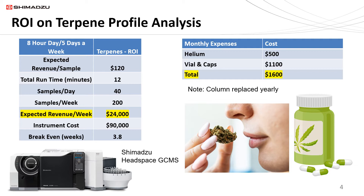The table presents an analysis time of 12 minutes, which could be increased based on the number of terpenes being analyzed. It has been reported there are over 5,000 terpenes in nature and 200 in cannabis, although most profiles analyzed contain less than 20. Revenue is typically in the range of $120 per sample. At 200 samples per week, the revenue will be $24,000 per week, and the break-even point for the instrument is typically less than one month. The most prominent consumable is helium at $500 per month. Adding vials and caps increases expenses another $1,100 for a total of $1,600 per month. Because the sample is very clean, the column would only need to be replaced yearly.